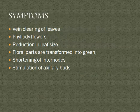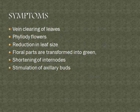The symptoms include: vein clearing of the leaves, phyllody of flowers, reduction in leaf size, floral parts transformed into green, shortening of internodes, and stimulation of axillary buds. These are some of the common phytoplasma symptoms, almost all of which are seen in sesame phyllody disease.